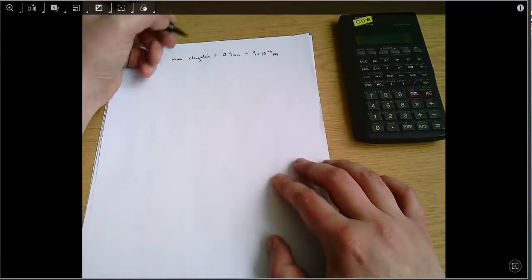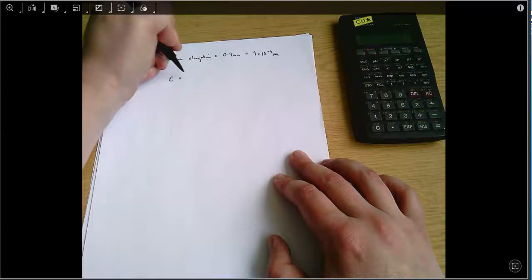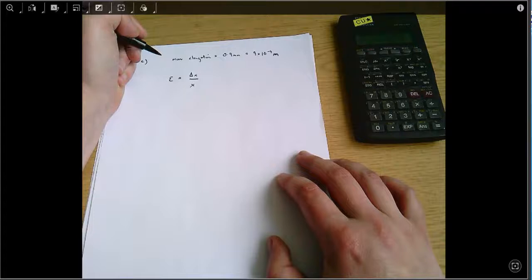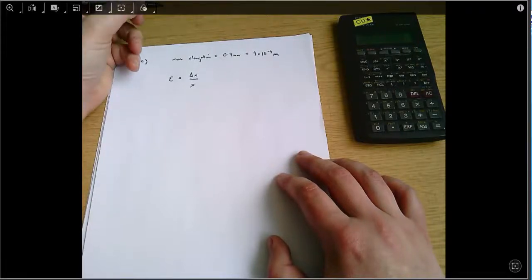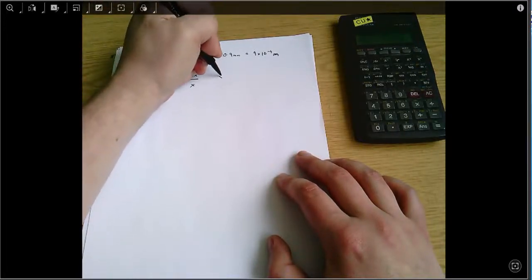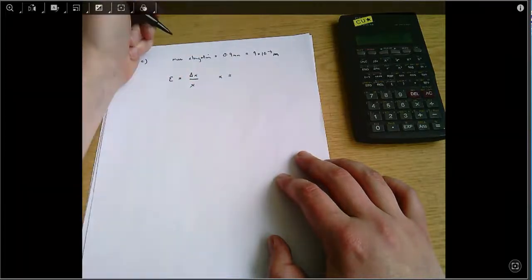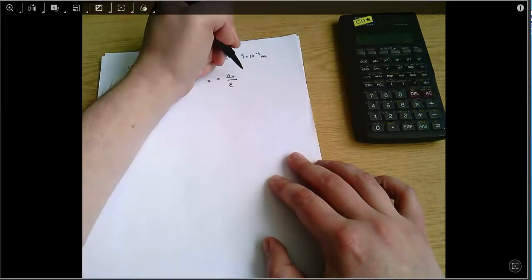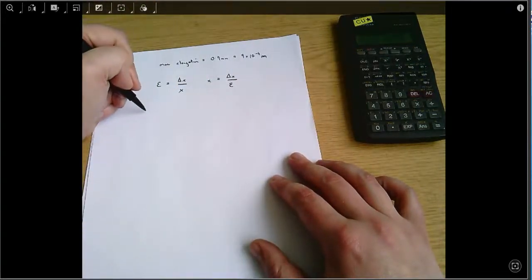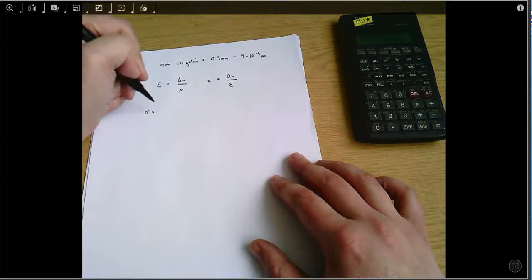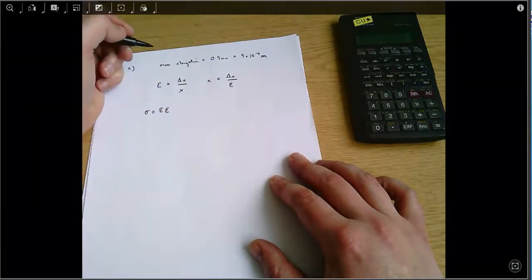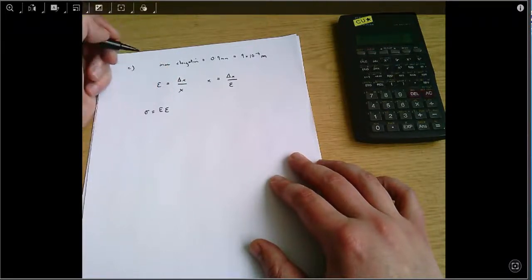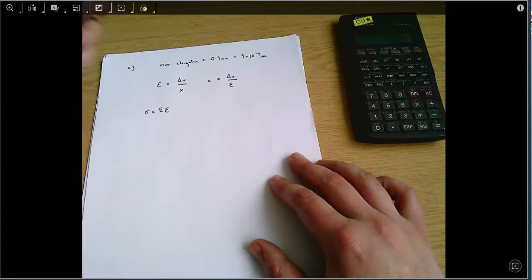And I guess the thing that I'm going to use next is the definition of strain. It's the change in length divided by the original length. And the length of the bar is kind of what we're asked for here. So x equals delta x over epsilon. And then we also need to say sigma equals E epsilon. We don't know what the strain is, but it's the only thing that we can really use to find out this required original length of the bar x.